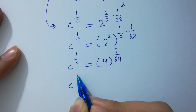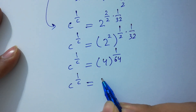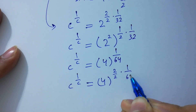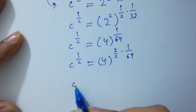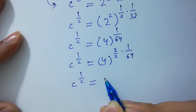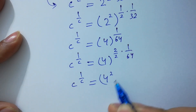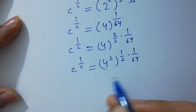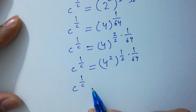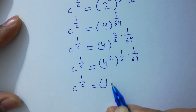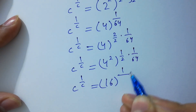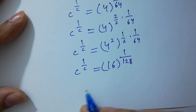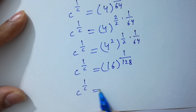C to the power 1 over C equal to 4 to the power 2 over 2 times 1 over 64, with C to the power 1 over 64. Then C to the power 1 over C equal to 4 squared to the power 1 over 2 times 1 over 64, with C to the power 1 over 64. So C to the power 1 over C equals 4 times 4, which is 16, to the power 1 over 16.